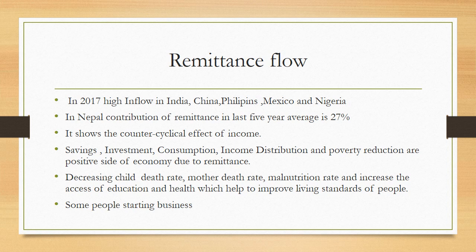Looking at remittance flows in 2017, the highest inflows are in India, China, Philippines, Mexico, and Nigeria. In Nepal, the average contribution of remittance over the last five years is 27%. The counter-cyclical effects on income, saving, investment, consumption, income distribution, and poverty reduction are the positive sides of the economy due to remittance.